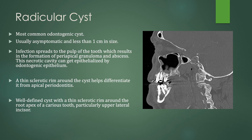A radicular cyst is the most common odontogenic cyst. These are usually asymptomatic and less than one centimeter in size. This is an infection that spreads to the pulp of the tooth, which results in formation of a periapical granuloma and abscess. This cavity, if it lasts long enough, can get epithelized by odontogenic epithelium. It is a cyst at the root of the tooth, and it usually has a thin sclerotic rim to help differentiate it from apical periodontitis. Look for a well-defined cyst with a thin sclerotic rim around the root apex of a carious tooth, and especially those upper lateral incisors.